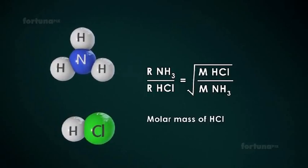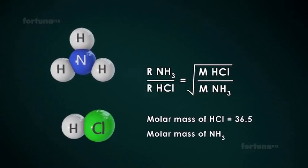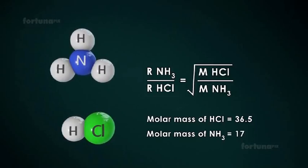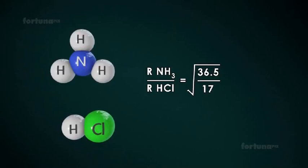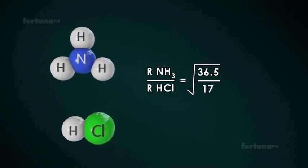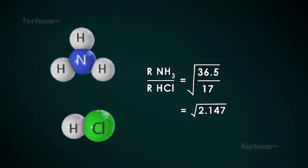Molar mass of HCl equals 36.5 and molar mass of NH3 equals 17. Now substitute the values in the equation. Square root of 2.147 equals 1.465.